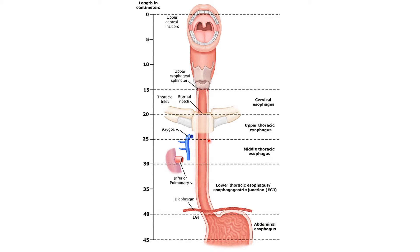The esophagus lies just to the left of the median plane and is located in the thoracic compartment. It then enters the diaphragm, passing through the esophageal hiatus just to the left of the median plane at the level of T10. It is then terminated at the esophagogastric junction, which enters the stomach at the cardiac orifice.